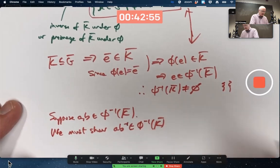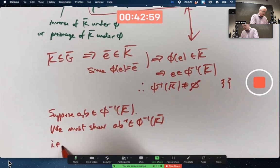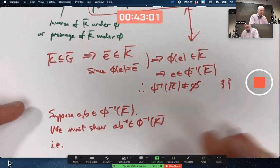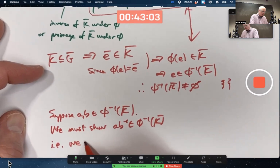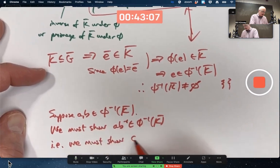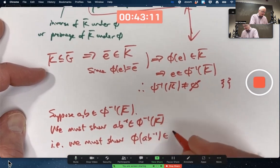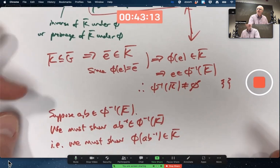that A times B inverse is also in the preimage. Then you just have to tease out what does that mean? What does it mean to be in the preimage? i.e. we must show that φ applied to A B inverse is in K bar. That's what it means to be in the preimage of K bar.